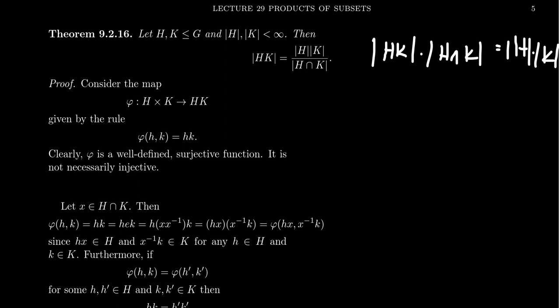The way we're going to do this is the following: we're going to consider a map from the direct product of H times K to this Frobenius product HK. Notice that when you take the order of H cross K, this is equal to the order of H times the order of K. So that connects you to the right hand side.